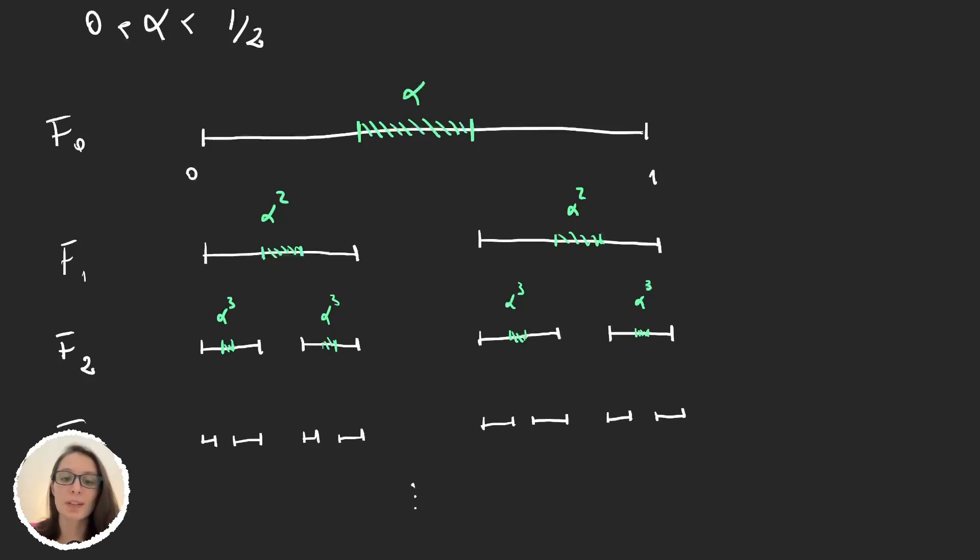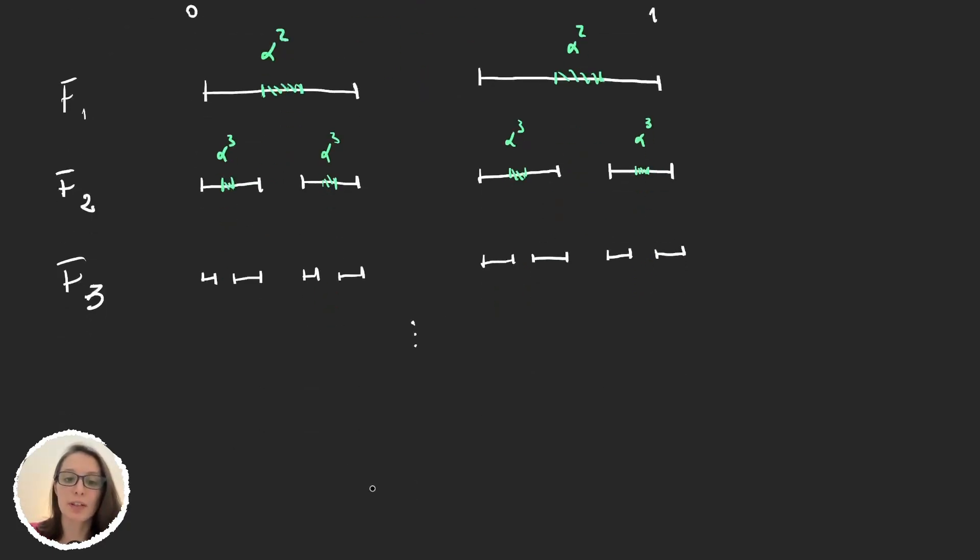And so we go on indefinitely and then define the function F to be the intersection from k equals 1 up to infinity of the Fₖ's.